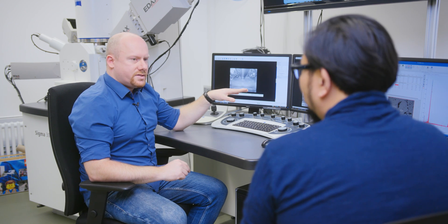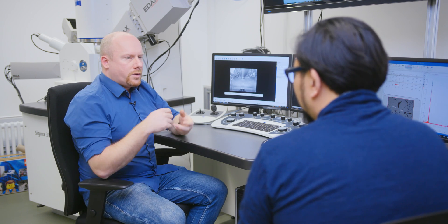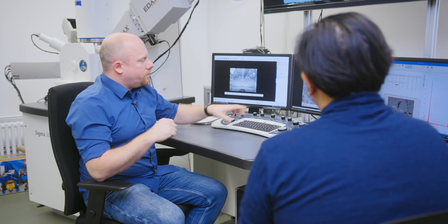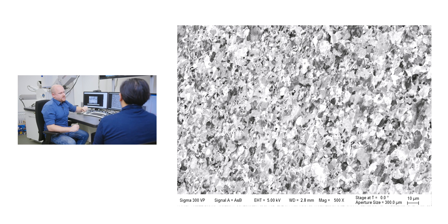In this case, we have a polished steel sample. Normally, we just would see a gray surface, but with the backscatter electrons, we get this nice grain contrast.